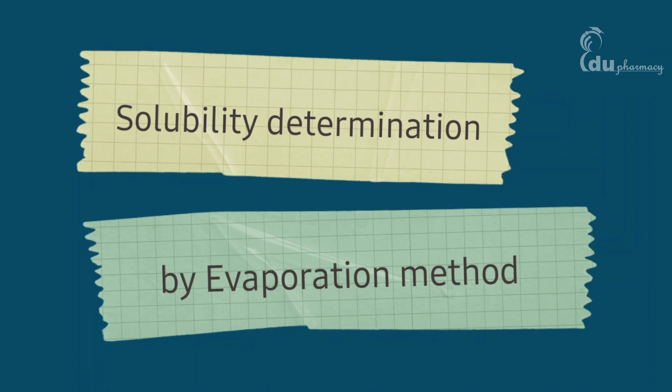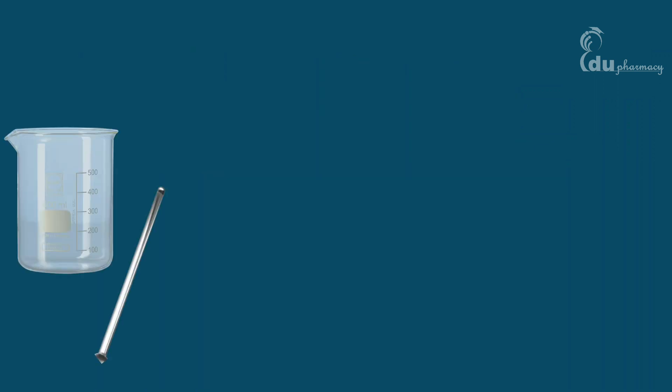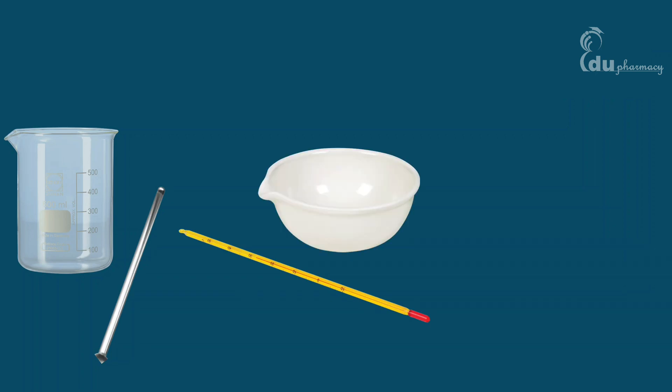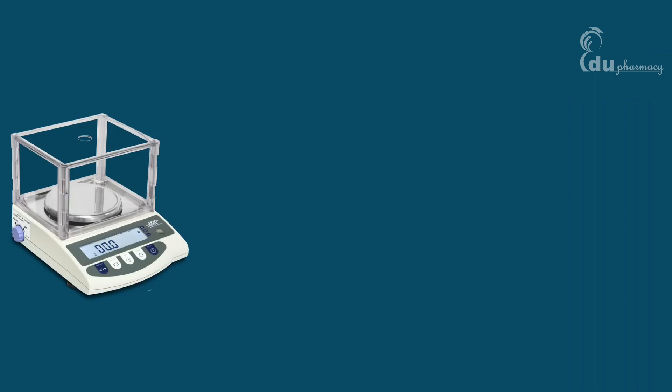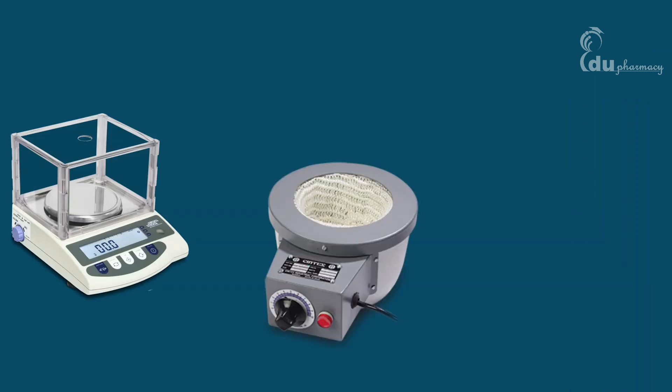To perform this experiment, we will require some apparatus such as a beaker, a stirrer, a thermometer, porcelain dishes, and a pair of tongs. We will also need a weighing balance, a heating mantle, and a burner.